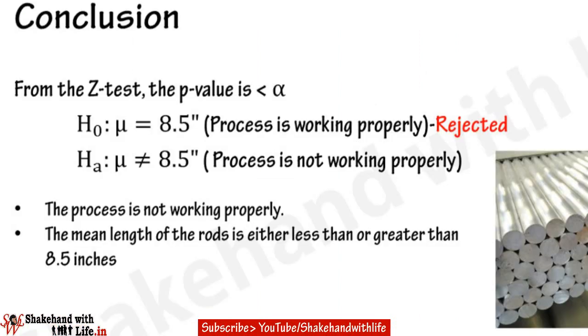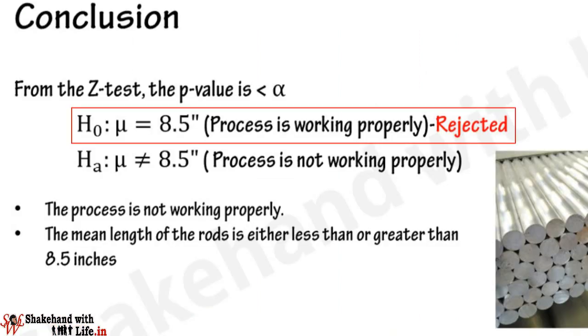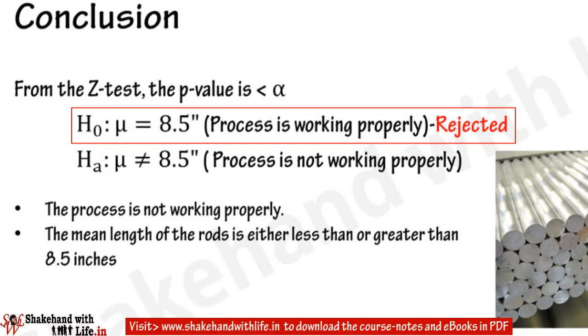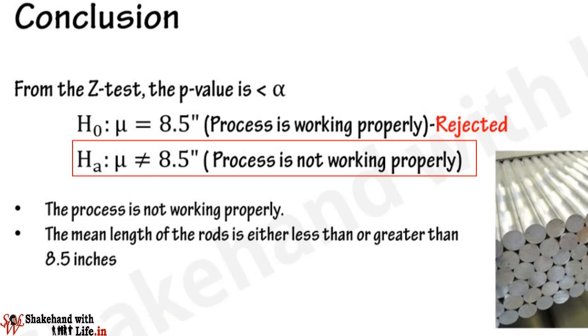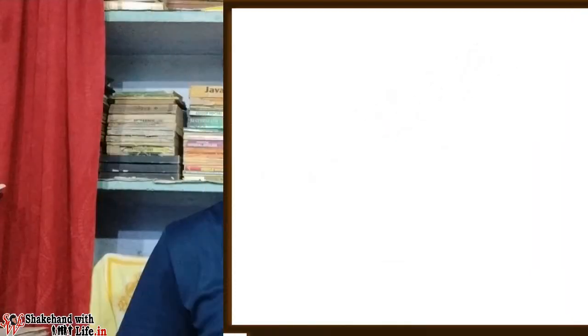From the Z-test, the p-value is less than alpha, therefore the null hypothesis stating the mean length of the rods equals 8.5 inches is rejected. Alternatively, the mean length of the rods is either less than or greater than 8.5 inches. Hence we conclude that with the given parameters and using the Z-test, the process is not working properly.